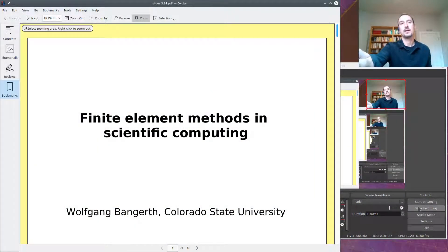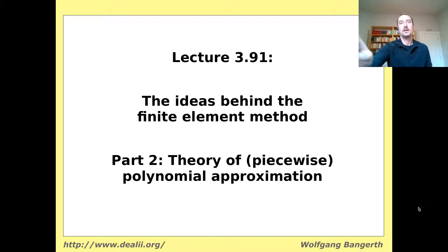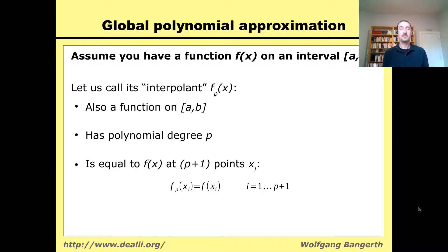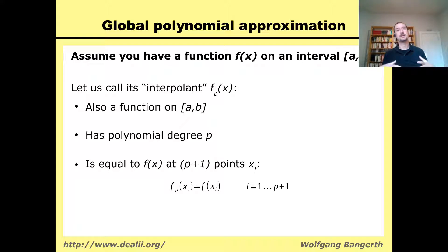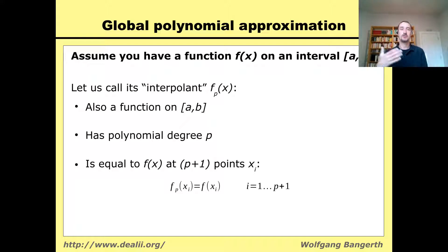This is lecture 3.91, and I would like to call this the theory of piecewise polynomial approximation. I have a function f(x), which later we will consider as the solution of the PDE. I'll show this in 1D: it is a function that lives on an interval a to b. I call the approximant fp(x), also on a and b. For the moment, I assume it is one single polynomial of degree p for the entire interval.